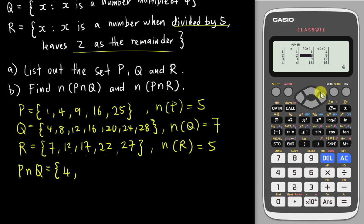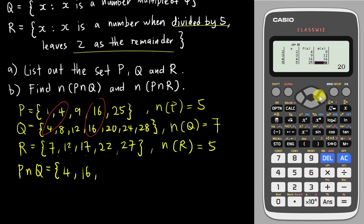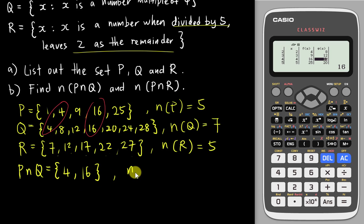So from the working, P intersect Q contains 4 and 16, and no more. That gives us 2 elements. In an exam, if you don't list the sets manually, the calculator helps you find the common numbers by comparing the two equations side by side. So the number of elements in P intersect Q is 2.